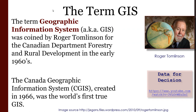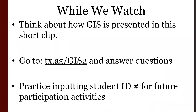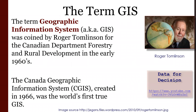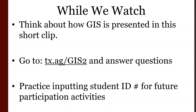So the next step is to think about how GIS is presented in a wonderful short clip called 'Data for Decision Making.' This was a Canada Film Board production that heard about this cool new thing called GIS and captured in the moment this wonderful example of what GIS was aiming to do. You can see the link on screen, search for it on YouTube, or find it in the course Moodle. Go to that link — tx.ag.gis2 — and answer a couple of questions. We'll reflect on those as we work through the rest of the course. Go listen to Roger Tomlinson talk about GIS for a little bit. See you back here in a little bit.